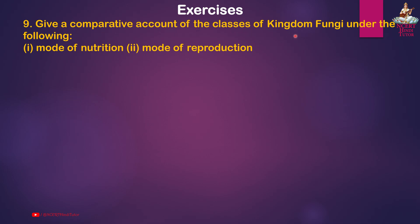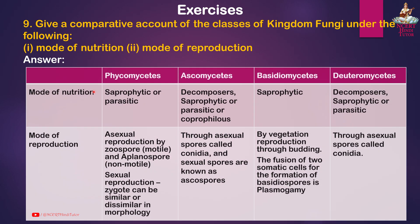Similarly, phycobionts prepare food through the process of photosynthesis, which is used by both organisms. Question 9: Give a comparative account of the classes of Kingdom Fungi under mode of nutrition and mode of reproduction. Answer: Phycomycetes — mode of nutrition: saprophytic or parasitic; mode of reproduction: asexual reproduction by zoospores (motile) and aplanospores (non-motile); sexual reproduction by zygote, which can be similar or dissimilar in morphology.